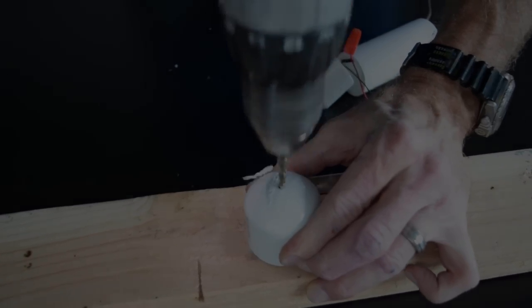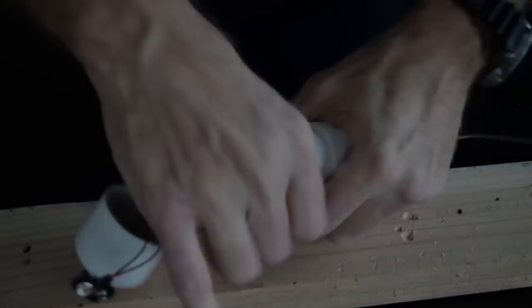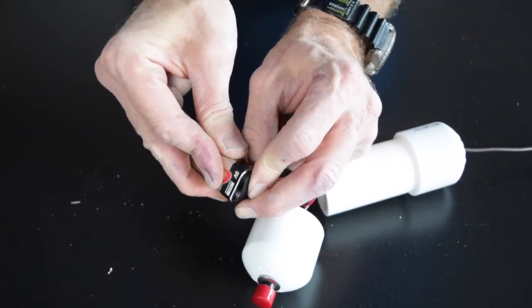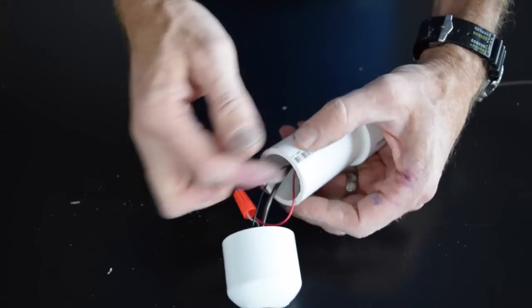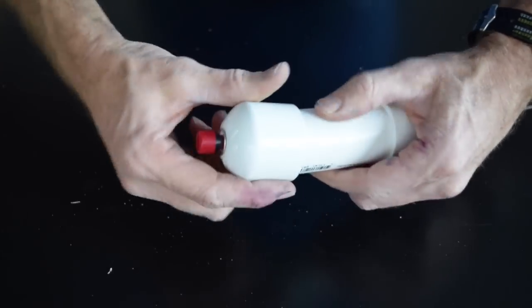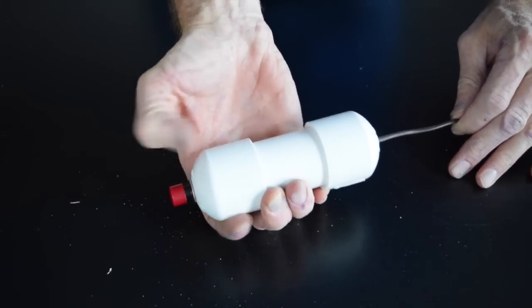I drilled a hole in the second cap and fed the wire going to the launch pad through it. A 9-volt battery was installed on the battery lead and the wires and battery were stuffed into the launch controller. Once everything was inside I installed the caps. I did not use glue to make it easy to get back into.